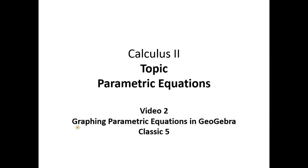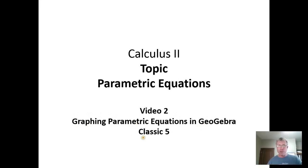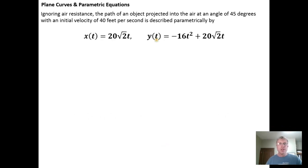In this video we're going to go over how to graph a parametric equation using GeoGebra Classic 5. In the previous video we looked at a parameterized motion of an object that we projected at an angle of 45 degrees with an initial velocity of 40 feet per second. This was the parameterization that we used in video 1 to represent the flight of the object after it was projected.